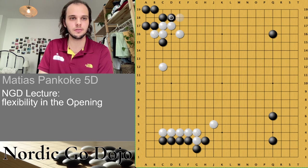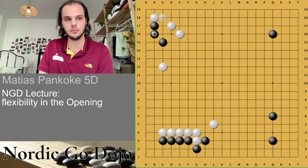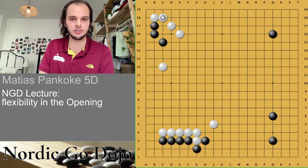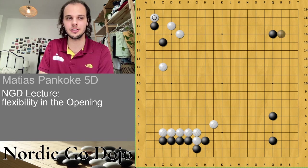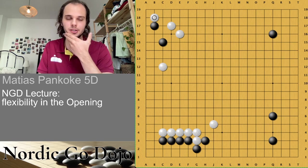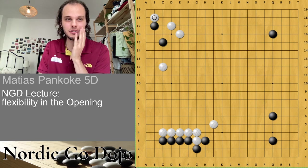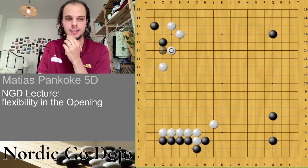Whenever there is an option like this, black has the choice — and it's always nice to have a choice. This move is not very common; that's why we usually take the outside. That's something black can actually always kind of do.